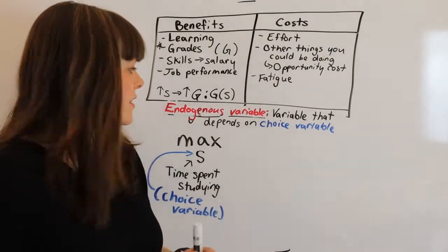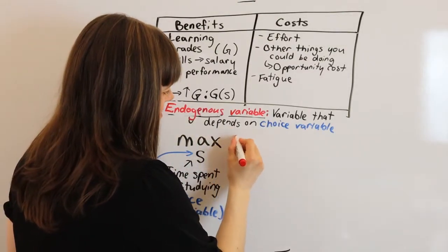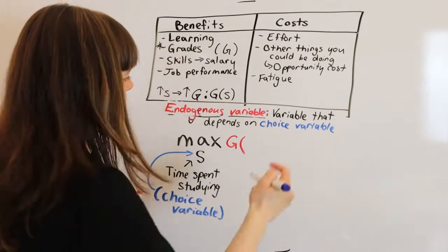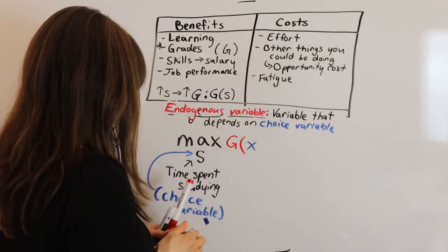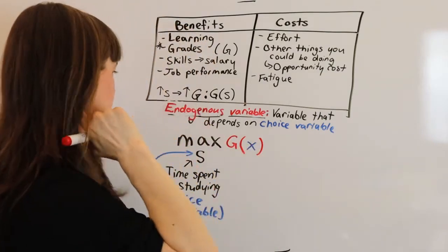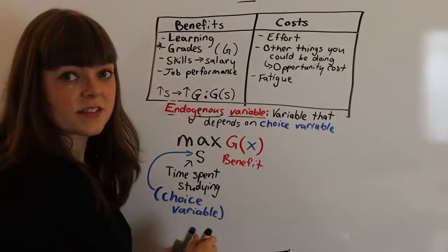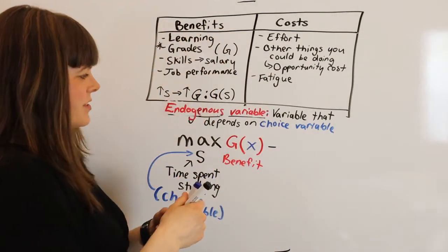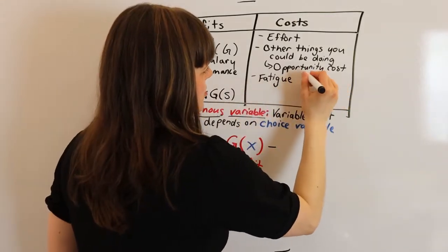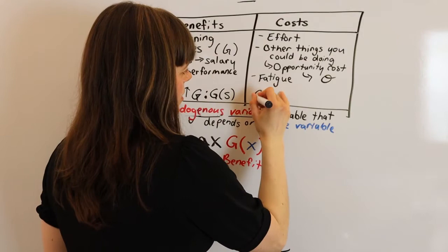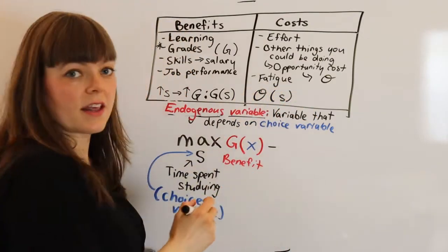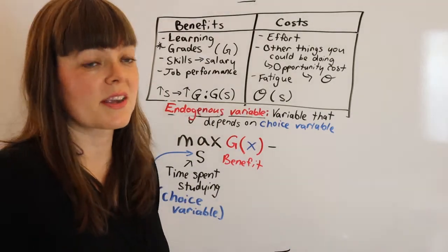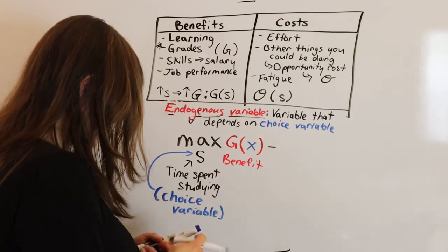So we will build our endogenous variables into our models like this. So grades is going to be a function of time spent studying, which is our choice variable, the thing we're choosing. And grades, of course, is going to be our benefit. And we're going to subtract our cost. And our cost will also be an endogenous variable. That's going to be opportunity cost. Opportunity cost, I'm going to let that be O. So opportunity cost is a function of time spent studying, meaning if we increase the time spent studying, we're going to increase the opportunity cost, increase what we're giving up to participate. So let's build that into the model.